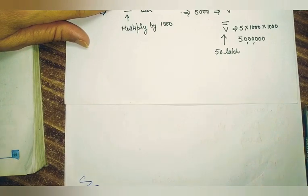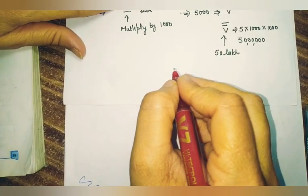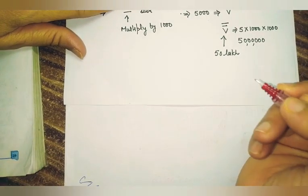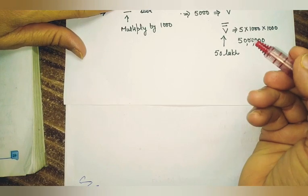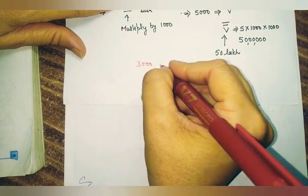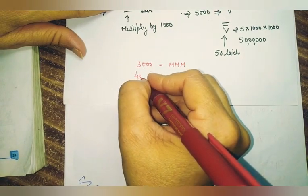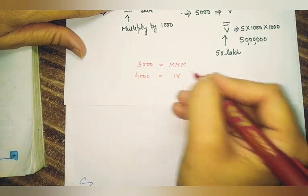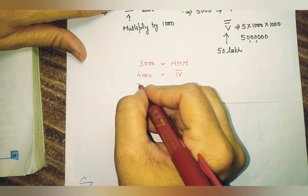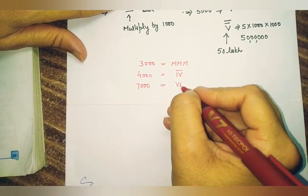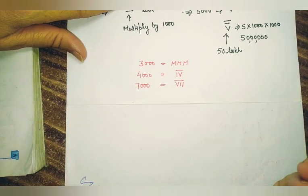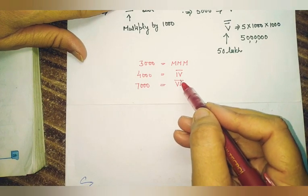We can use the bar to write numbers greater than 3000. Till 3000 we can repeat M, but after 3000 we use a bar. To write 3000, repeat M three times. To write 4000, write IV with a bar above it. To write 7000, write VII with a bar above it. By repeating this bar, we can write very large numbers — even up to crore.